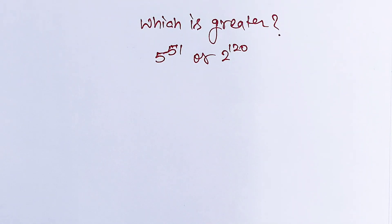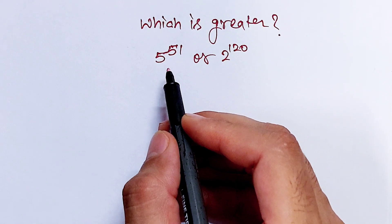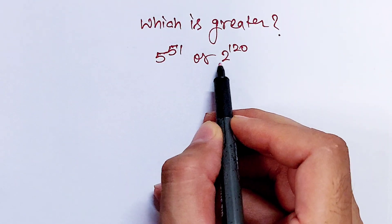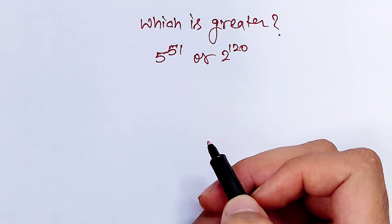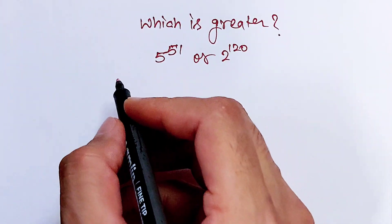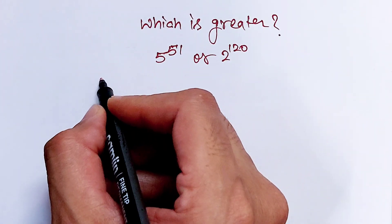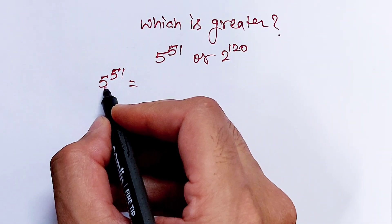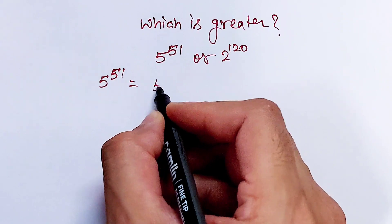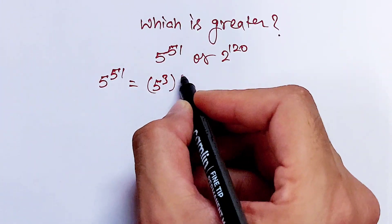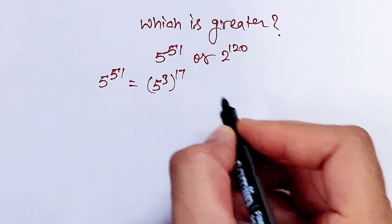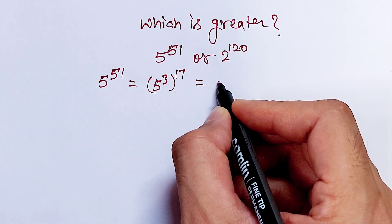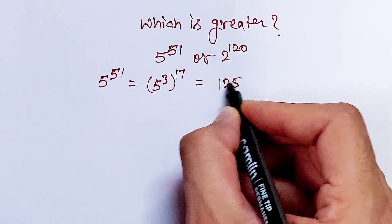Hello dosto, the question is: which number is greater, 5 power 51 or 2 power 120? Let's find out. First, rewriting 5 power 51 — this number is the same as 5 power 3, whole power 17. Further solving, 5 power 3 is 125, whole power 17.